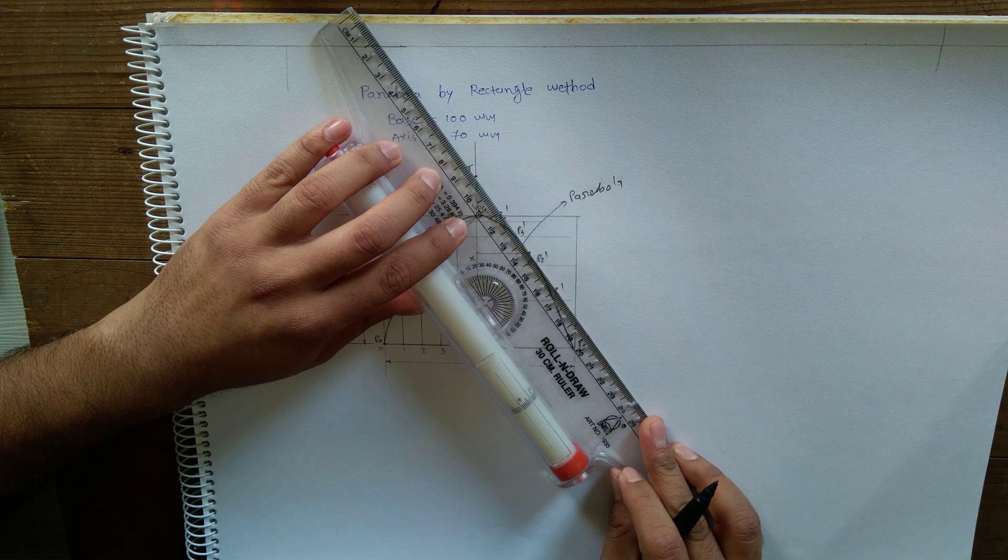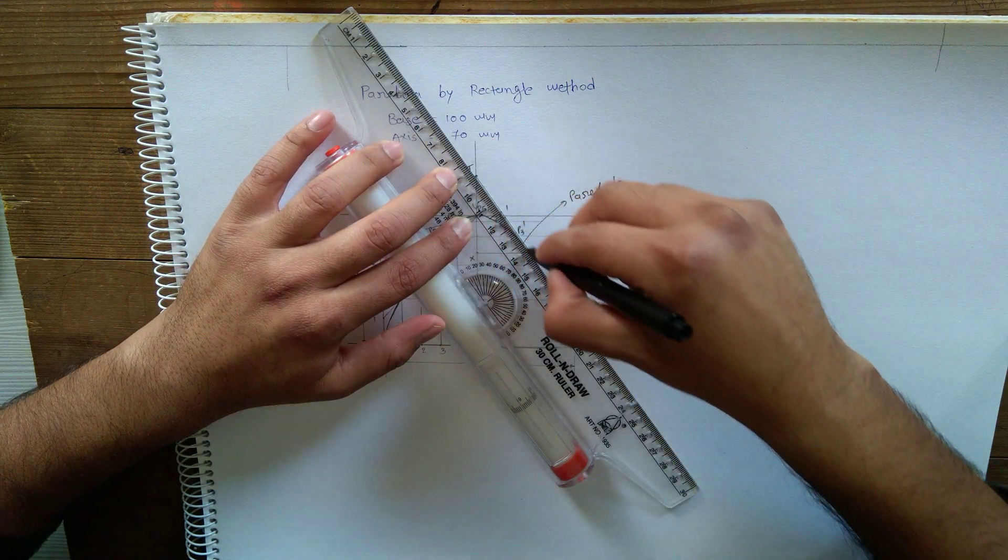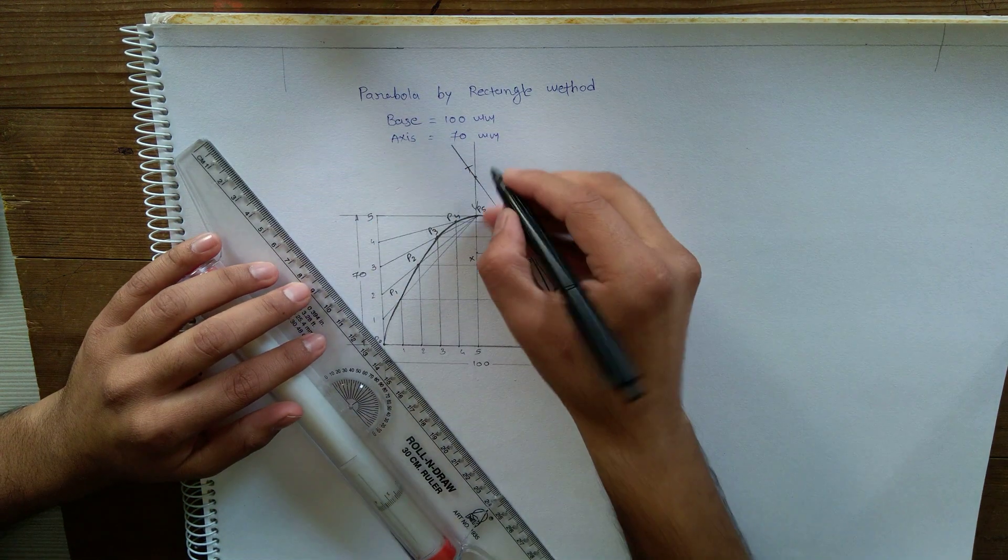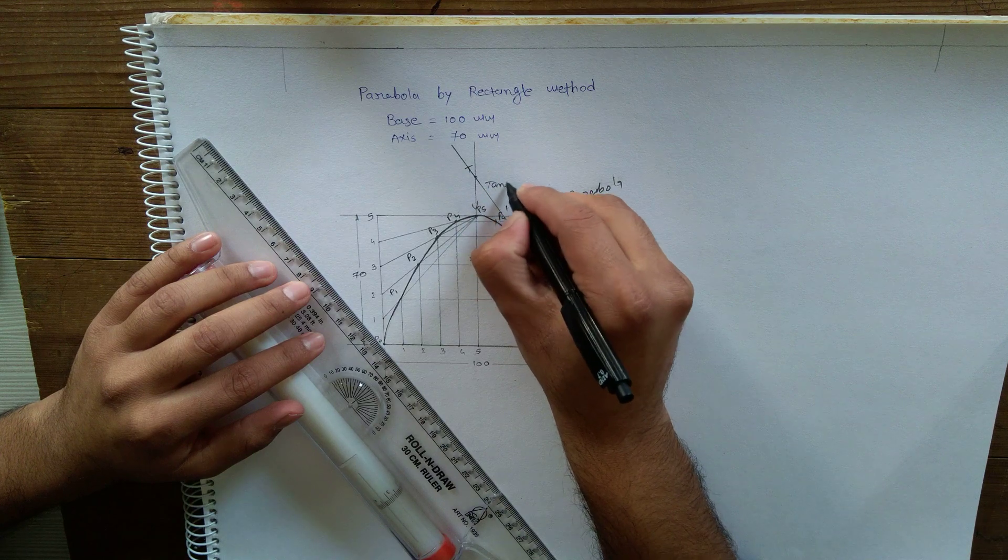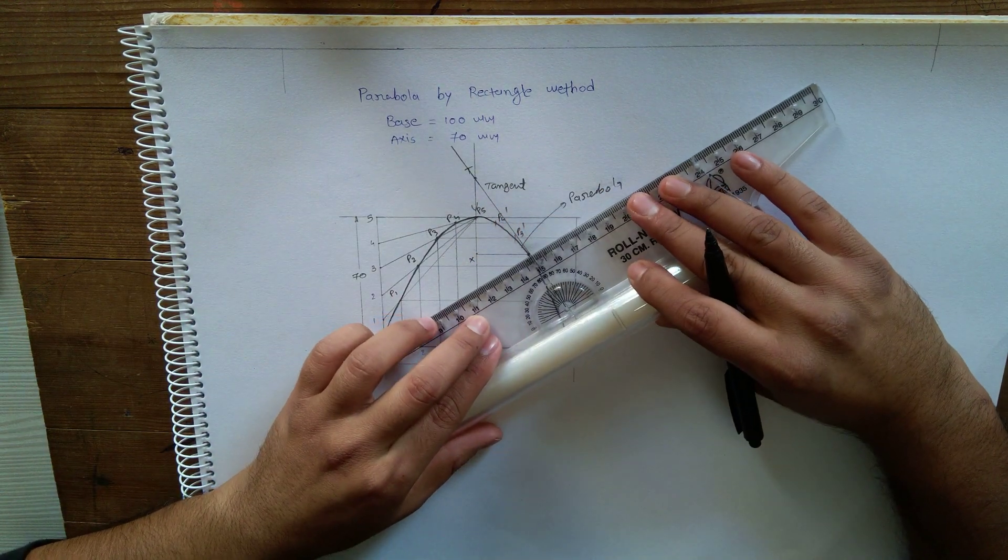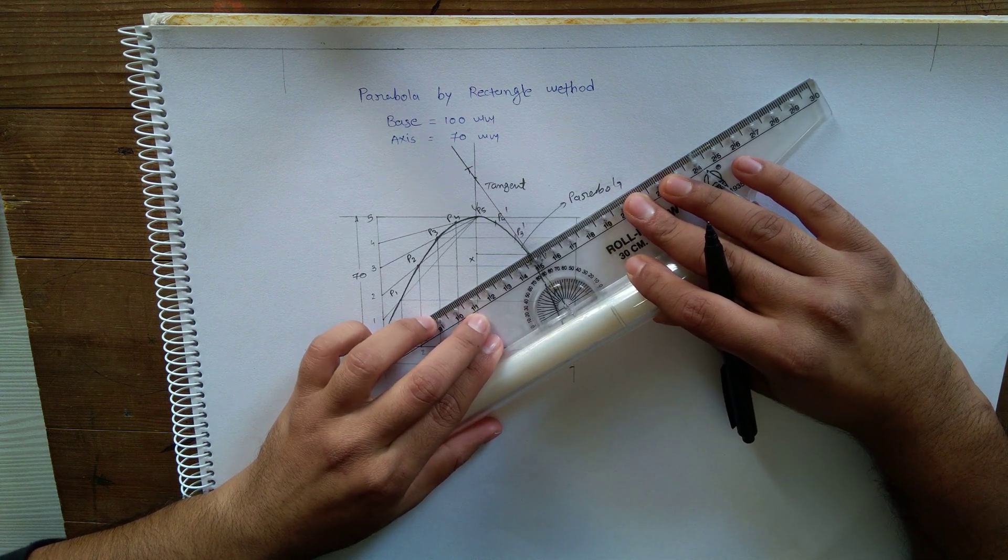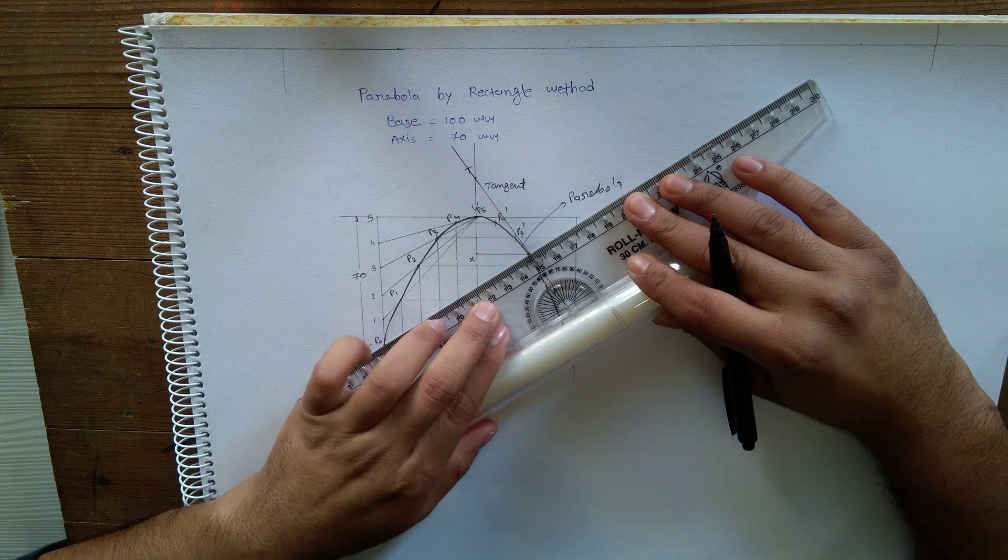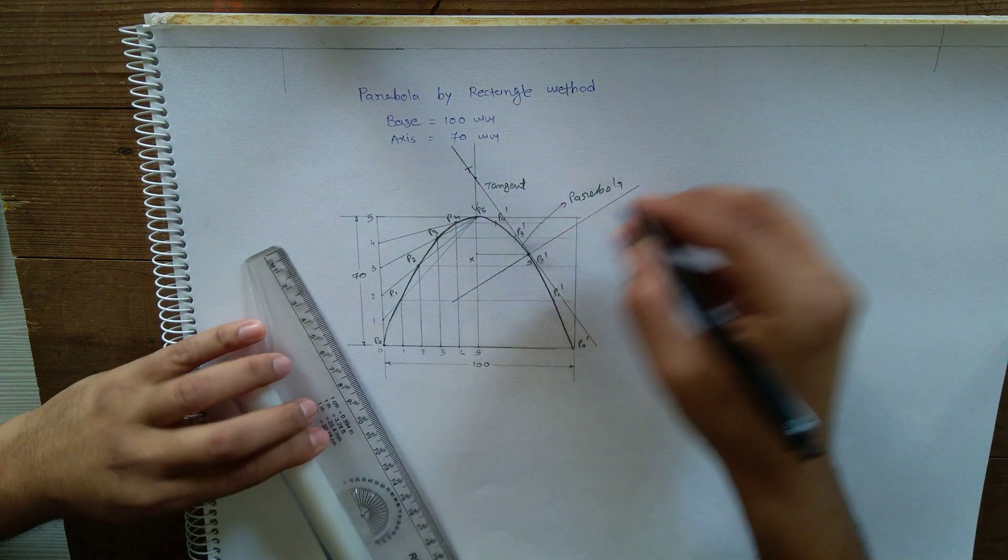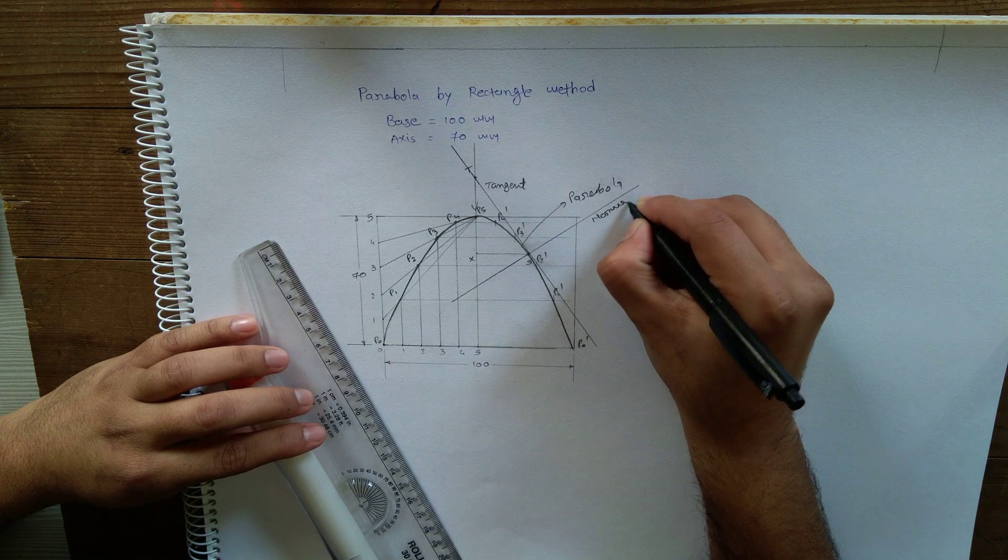and S, it will give you tangent at point S to the parabola. And for normal, simply draw line at 90 degree to the tangent from point S. So this is normal. Thank you.